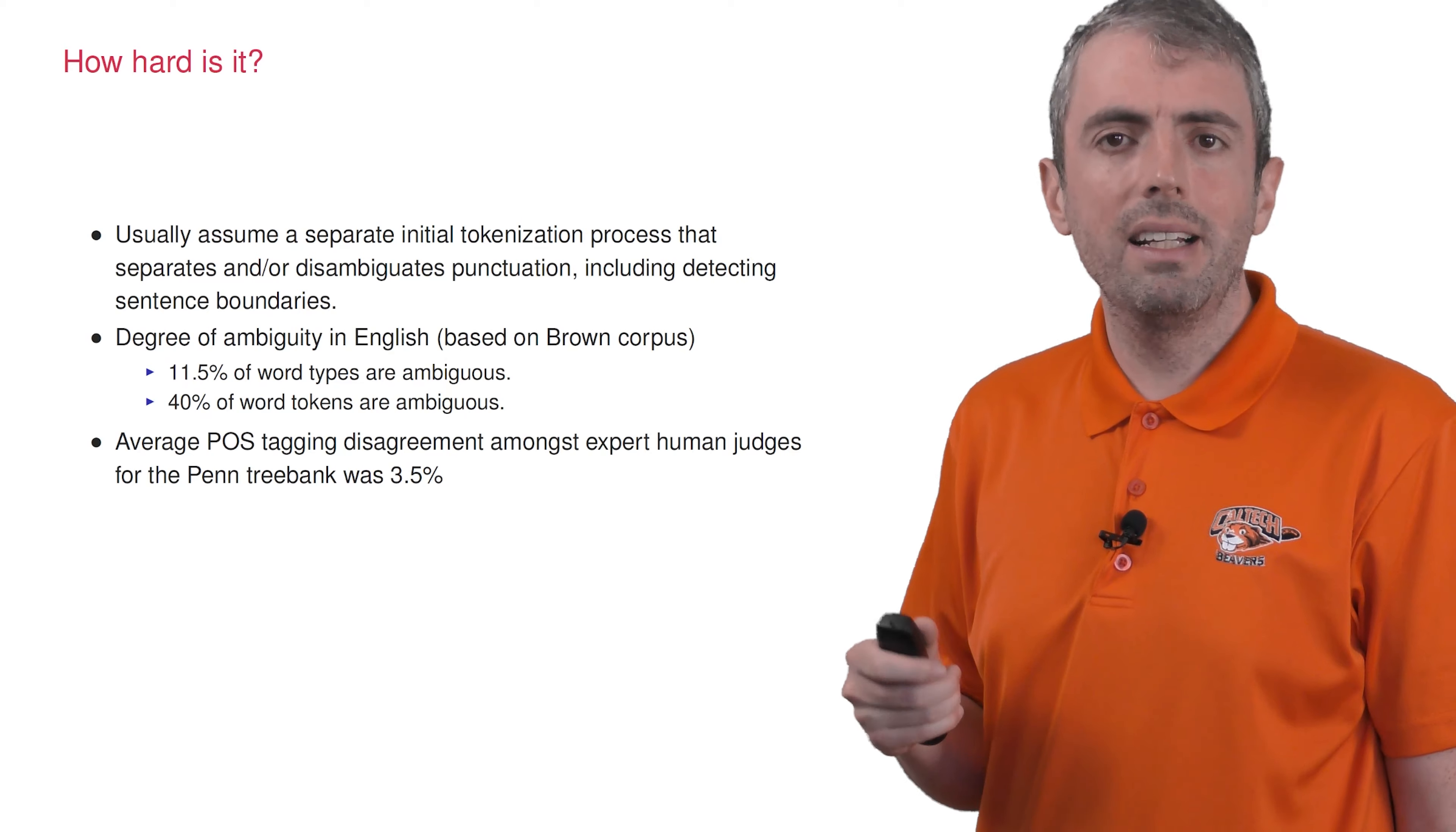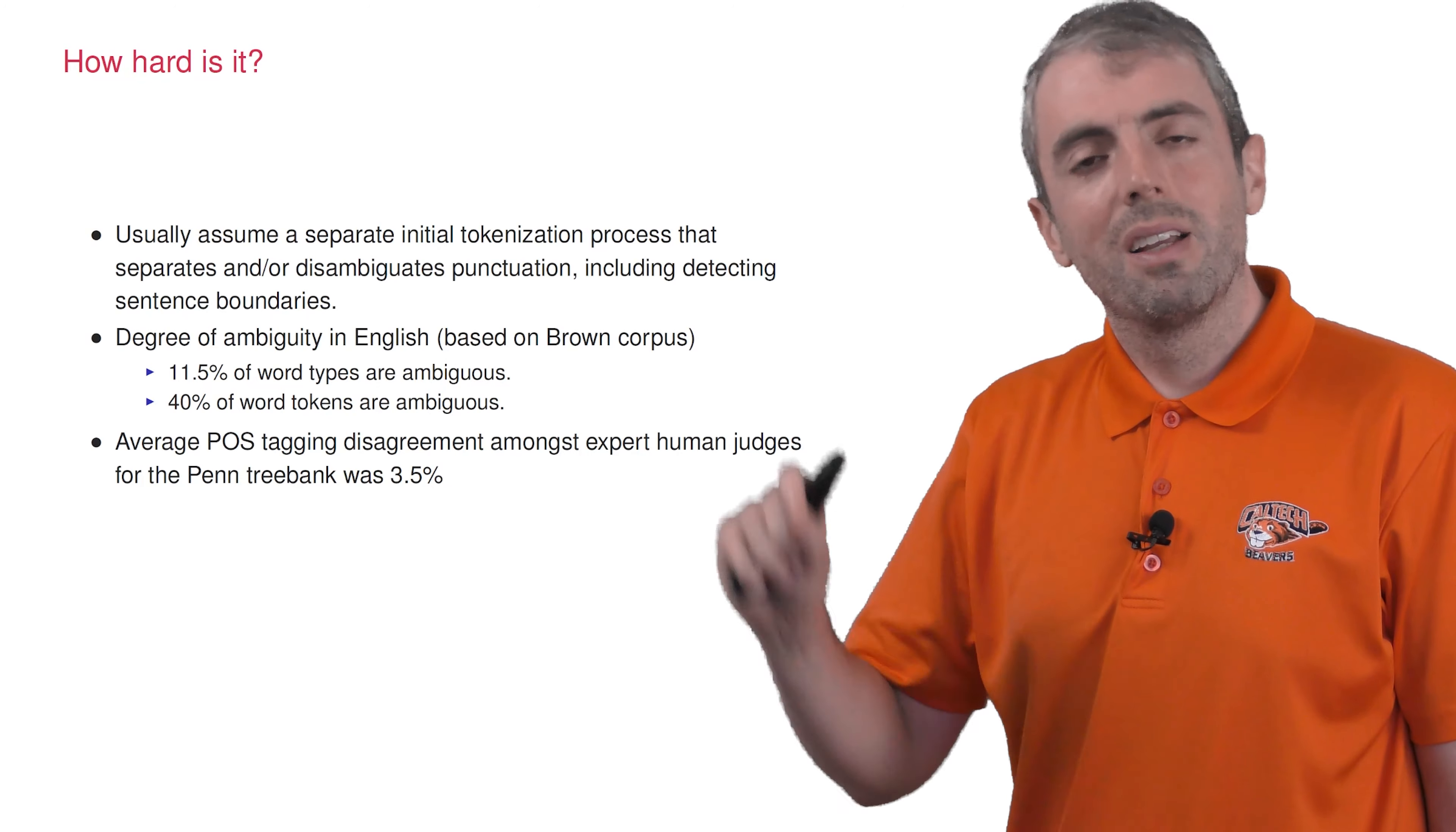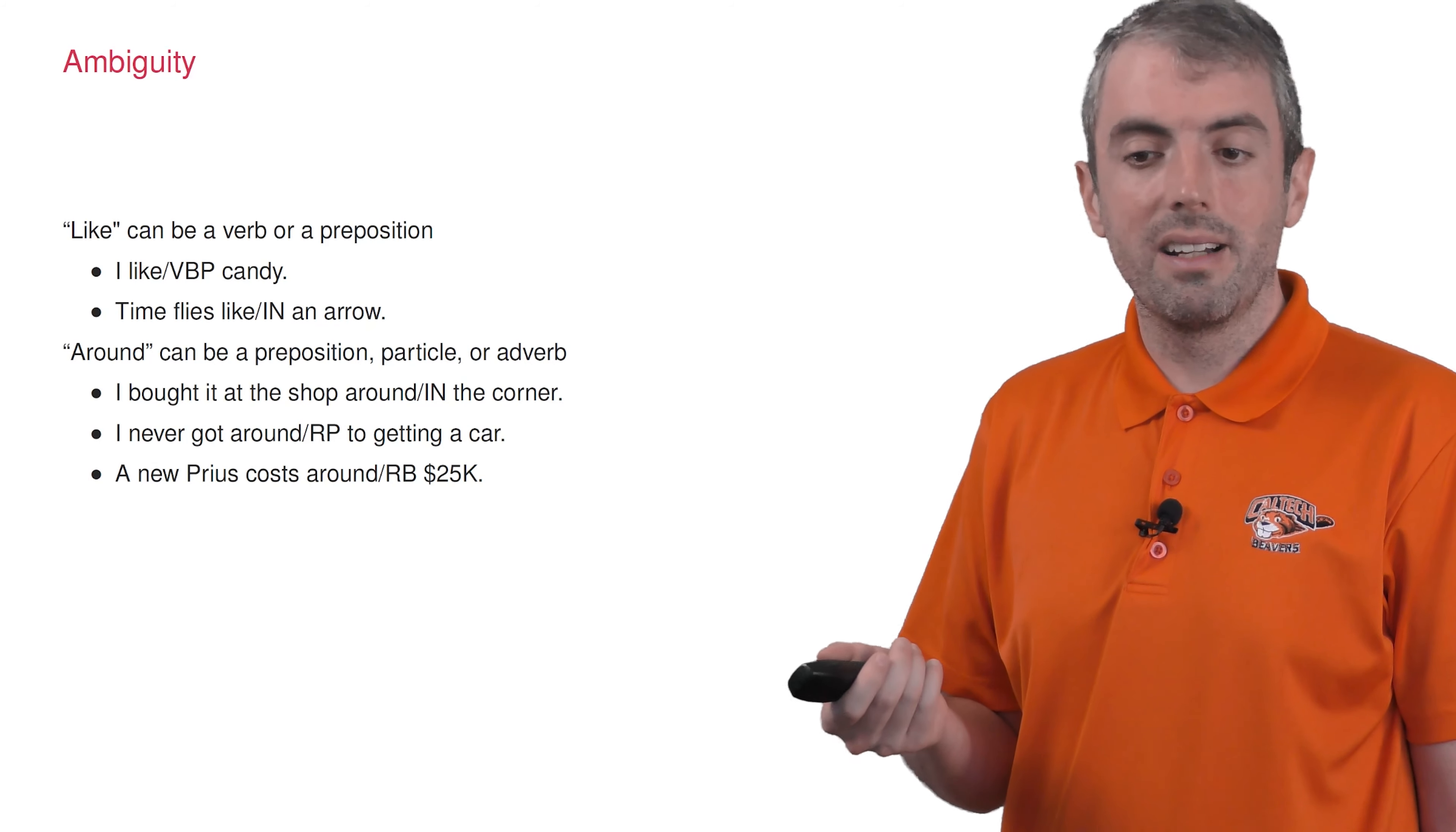So how hard is part of speech tagging? Let's assume that we know what the words are. This is easy in English, usually. In English, 11.5% of word types are ambiguous. That doesn't sound like a lot, but don't forget about our good old friend Zipf's law. The most frequent types are pretty ambiguous and they appear a lot. Thus, 40% of word tokens are ambiguous. Here are some examples of like and around being ambiguous. I like candy is a verb. Time flies like an arrow is a preposition. Around can be a preposition, a particle, or an adverb. I bought it at the shop around the corner is a preposition. I never got around to getting a car is a particle. A new Prius costs around $25,000 is an adverb.